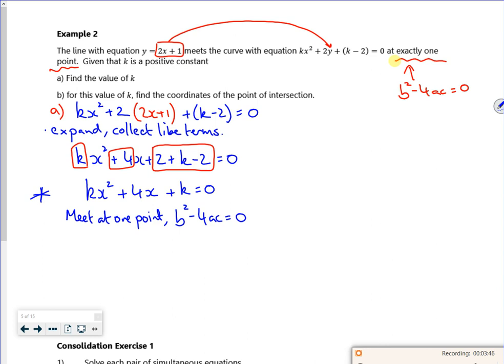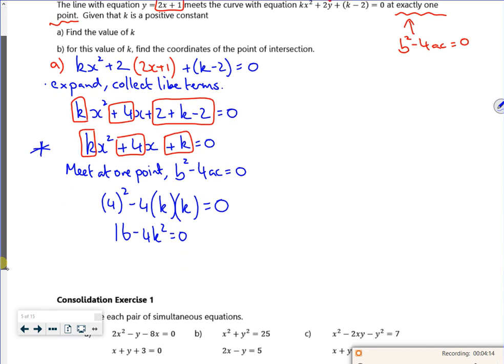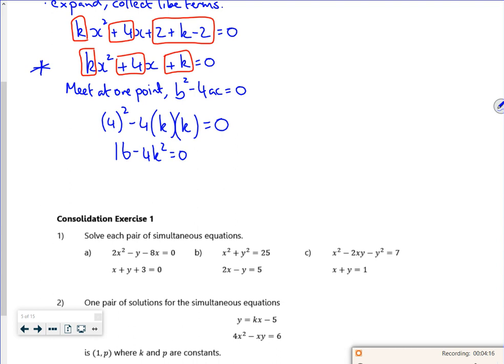So my b value is 4. My a value is k, and my c value is k. So I've got 16 minus 4k² is zero. You can spot that as a difference of two squares, and I could split it down as 4 minus k² is zero. But I should get k is plus or minus 2.